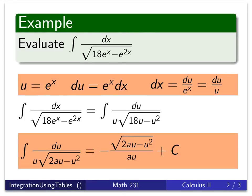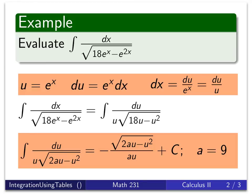And here's the one that we need. I've got the u outside. I've got the minus u squared. And then I've got 2au on the inside there. And this formula is what appears in my book. I just need to use a equals 9 because 2a is going to be 18, so a must be 9.